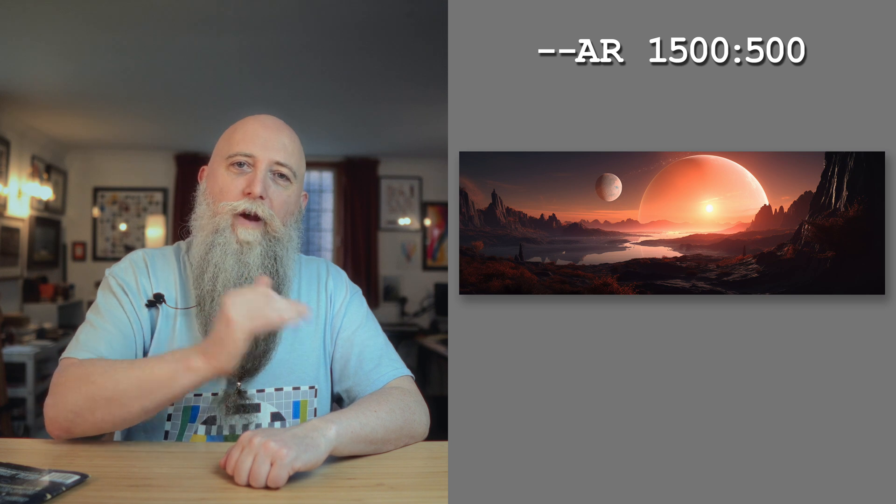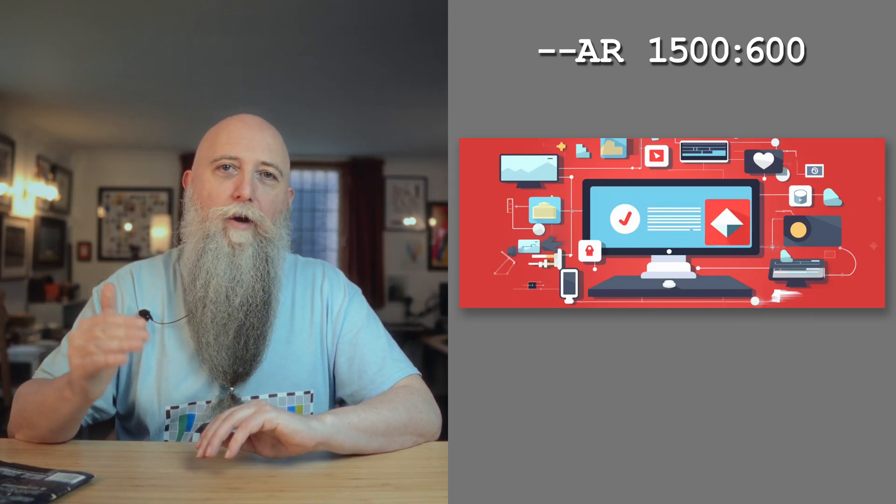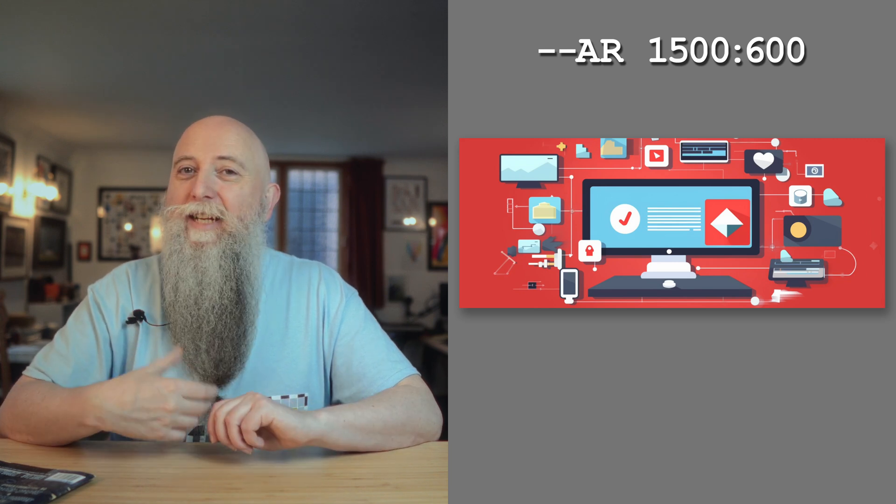Let's dive into some examples of using absolute numbers for social media and print dimensions, starting with Twitter banners. Various sources recommend a size of 1500 by 500 pixels for a Twitter banner. If you're unsure about the ratio or simply don't want to do the maths, you can just use the command minus minus AR 1500 colon 500 and you're good to go. Remember, version 5 makes everything so much easier. Now let's talk about Notion header images. As a popular productivity tool which I use all the time, Notion recommends a header image of around 1500 by 600 pixels, which I can now just plug in with minus minus AR 1500 colon 600, and it just does it.